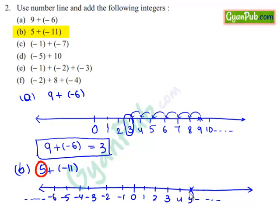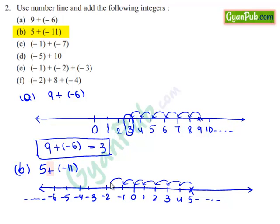And then we will add minus 11, which means we move 11 steps to the left of 5: 1, 2, 3, 4, 5, 6, 7, 8, 9, 10 and 11. Then we reach minus 6. So, when we add 5 and minus 11, we reach minus 6.